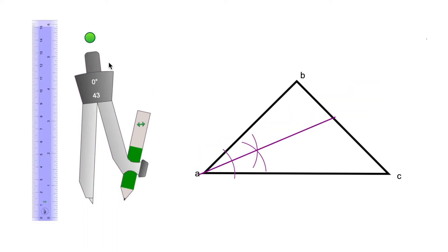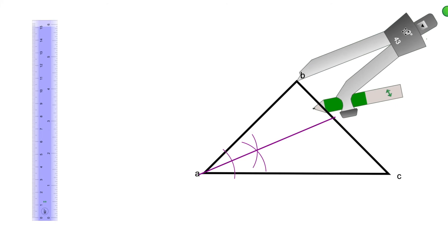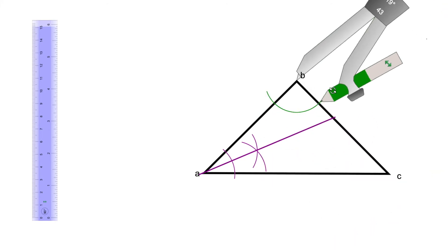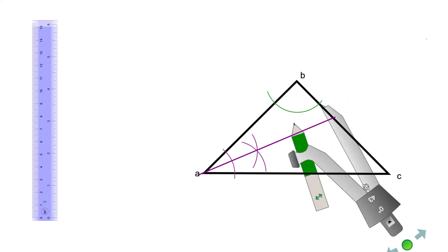Now we are going to draw the bisector of angle B. I'll grab my compass, put the needle on point B, and trace an arc. Then with the same measurement, I'll open my compass.